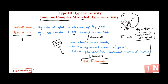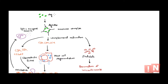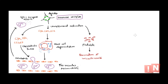Let me explain the mechanism in diagram form. In normal conditions, any antigen entering the body causes antibody production, forming an immune complex. In type 3 hypersensitivity, this immune complex is not cleared by macrophages and starts getting deposited — either locally where the antigen entered, or systemically via circulation. Importantly, the antigen-antibody complex has the ability to activate the classical pathway of the complement system.